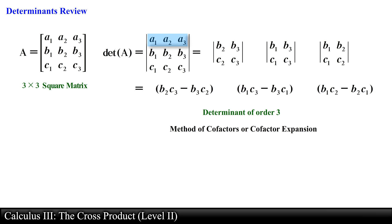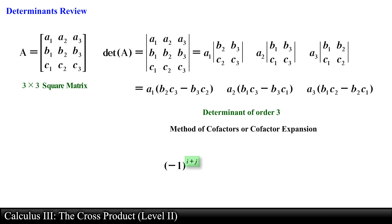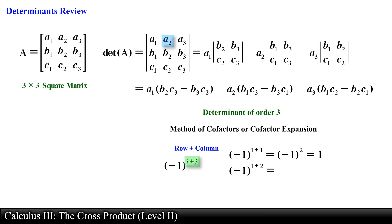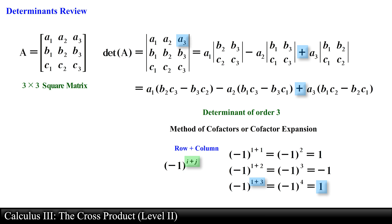We are not done yet — remember the row that we used to expand from? We will need to multiply each of the entries of this row with its respective minor. Lastly we need to determine the sign of the cofactor using the expression (-1)^(i+j), where i and j represent the row and column number respectively. For the first cofactor at row 1, column 1 the overall sign is positive. For the second cofactor at row 1, column 2 the overall sign is negative. For the third cofactor at row 1, column 3 the overall sign is positive. The sign will always be positive, negative, and positive as long as you are expanding from the first row.